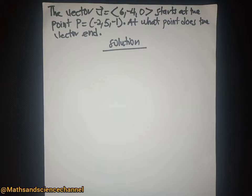Hello students, welcome once again to my channel. In this video we have a question of vectors. We are given the vector with coordinates <6, -4, 0> starting at the point P = (-2, 5, -1). At what point does the vector end?